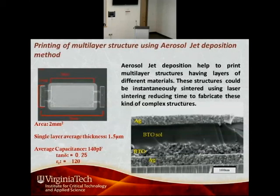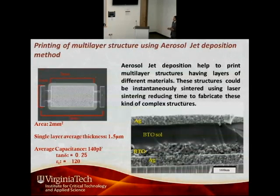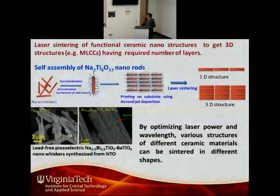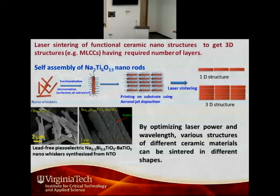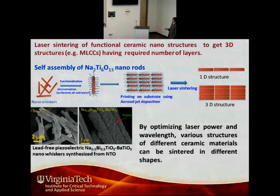Here is one example. We printed this multi-layer structure using various materials: a silver electrode on the bottom, then barium titanate deposited using a sol-gel method, and then another layer of silver electrode. This is the top view of this structure. We were able to measure the capacitance and the loss tangent on this structure, which shows the capability of this system to very easily make micro and macro-scale structures.